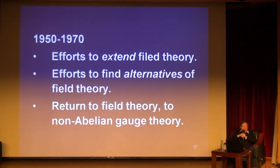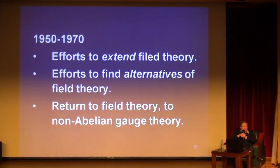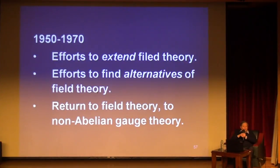With the success of renormalization, during the 20 years between 1950 and 1970, there were naturally efforts to extend field theory. There were also efforts to find alternatives to field theory, because although renormalization was successful, it was recognized that it was not enough to describe the new phenomena, especially the new particles that had been discovered experimentally. Finally, in the 1970s, physics returned to field theory — to non-Abelian gauge theory.